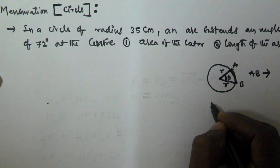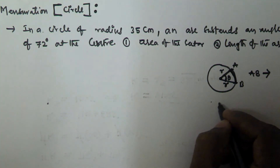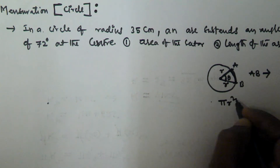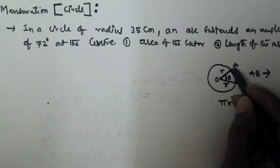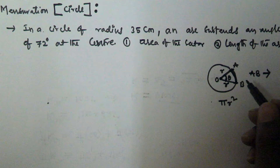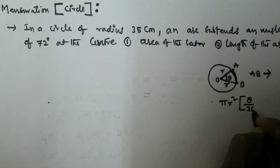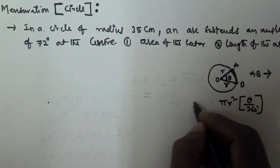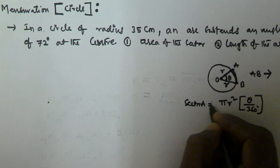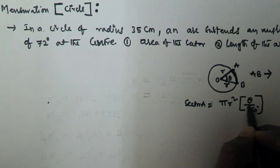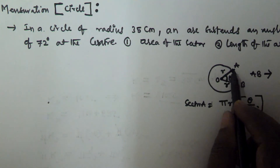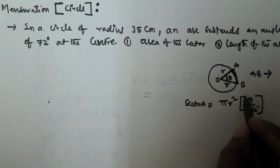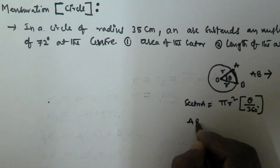We know that the area of a circle is given by πr². So the area of sector AOB is given by: sector area = πr² × θ/360, where theta is the angle made at the center by the arc.